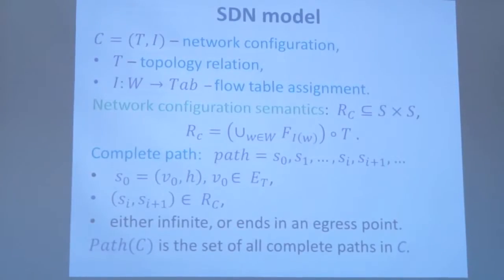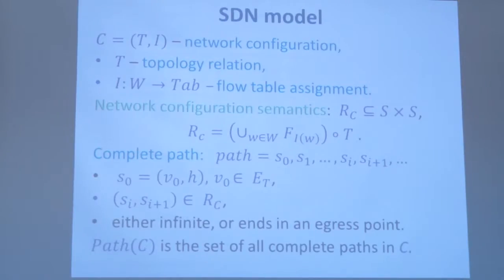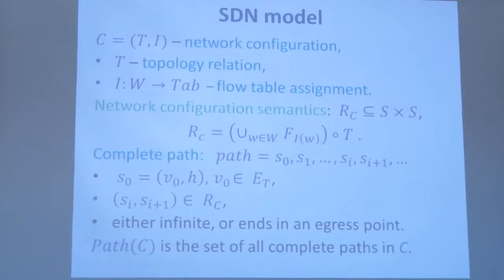The model of the whole network is specified by a pair. The first component of this pair is a description of the whole topology, and the second component is the assignment of flow tables to network switches. The semantics of our model may be computed as a composition of binary relations computed by individual flow tables and by the topology relation—this is a so-called one-hop relation. It specifies how the global states of packets change as they move through the full network.